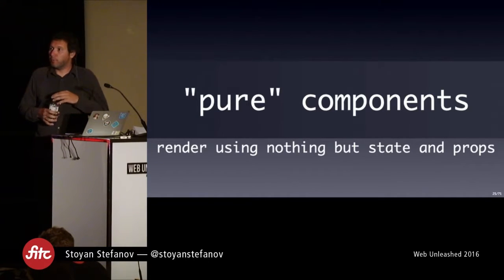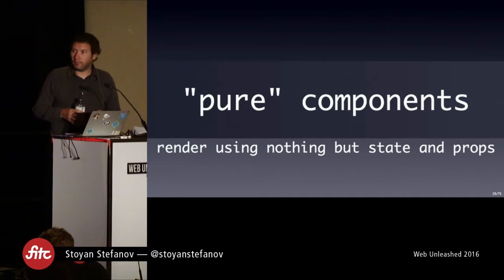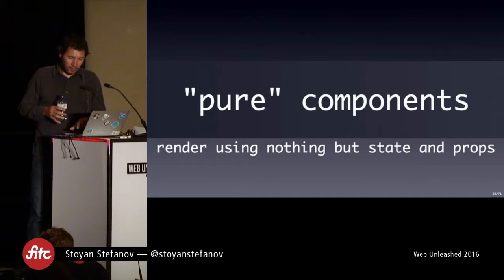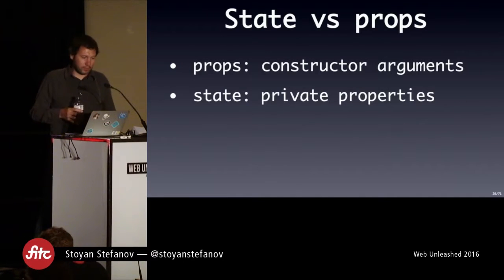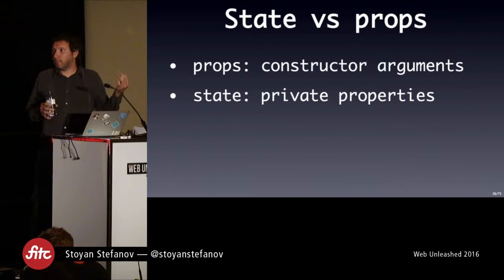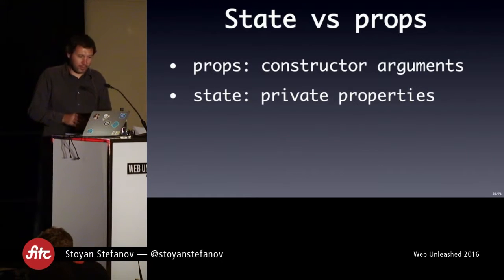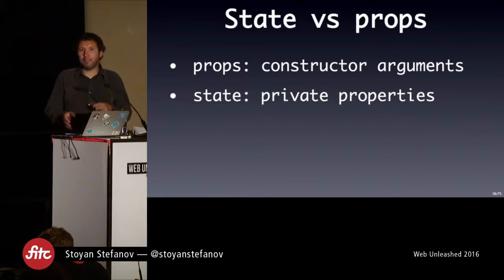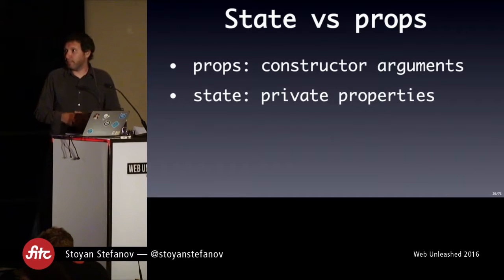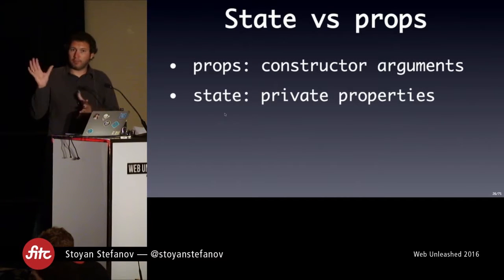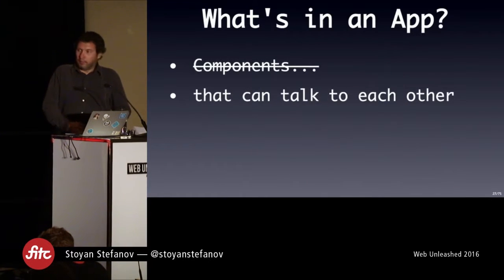If you use the ECMAScript 6 class syntax, there's no getInitialState — instead, in your constructor you initialize the state with whatever you want. There's the concept of pure components — components that use nothing but state and properties to render. People are often confused about state vs. properties. Drawing an analogy with object-oriented programming: props are things you pass to the constructor when you initialize it, and state is something the class maintains for its own purposes. State is private; props is how you configure.